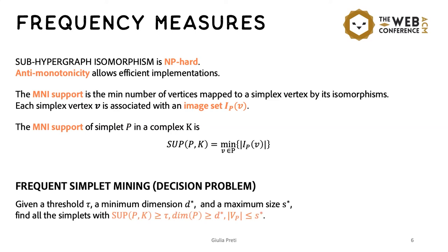Given all these ingredients, we define the frequent simplet mining problem as the decision problem that requires to find all the simplets with MNI support greater than a given threshold tau. And moreover, we include two other constraints. The first one is a minimum dimension D* that ensures a compact and more informative result. And then, a maximum size S* that allows us to control the complexity of the mining task. This kind of constraint is usually used also in graph mining.